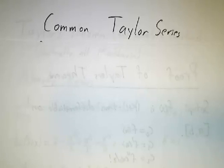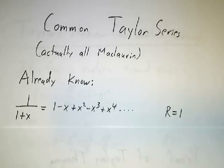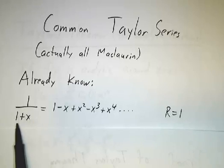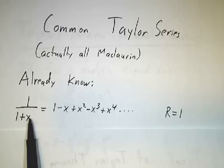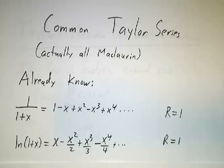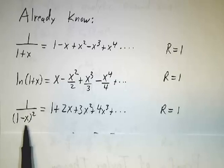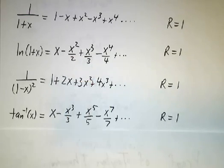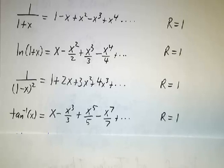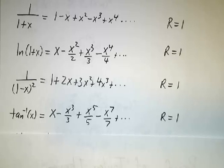Let's review what we know about the Taylor series for some common functions. We already know the geometric series — the series for 1 over 1 minus x. If we replace x with minus x, we get the series for 1 over 1 plus x. We can integrate that term by term, and that gave us a series for the natural log. We could take the derivative of the series of 1 over 1 minus x and got the series for 1 over (1 minus x) squared. We took the integral of the series for 1 over 1 plus x squared to get the series for arctangent. These were all based on the geometric series with tricks like taking derivatives and integrals, but it would be nice to have a systematic way to get the Taylor series for any function.